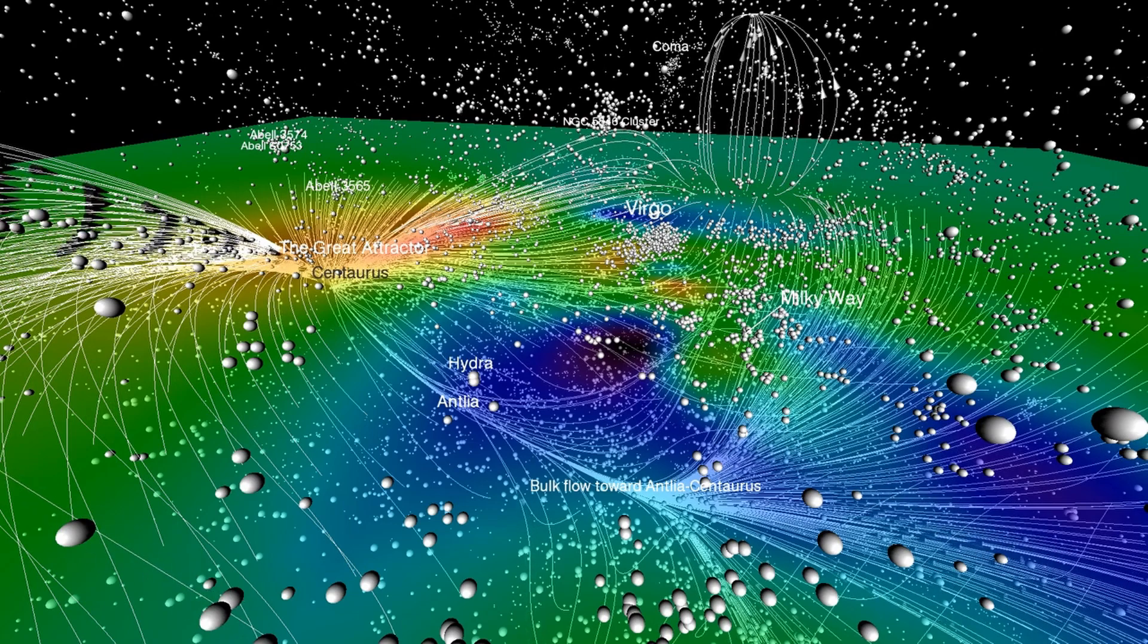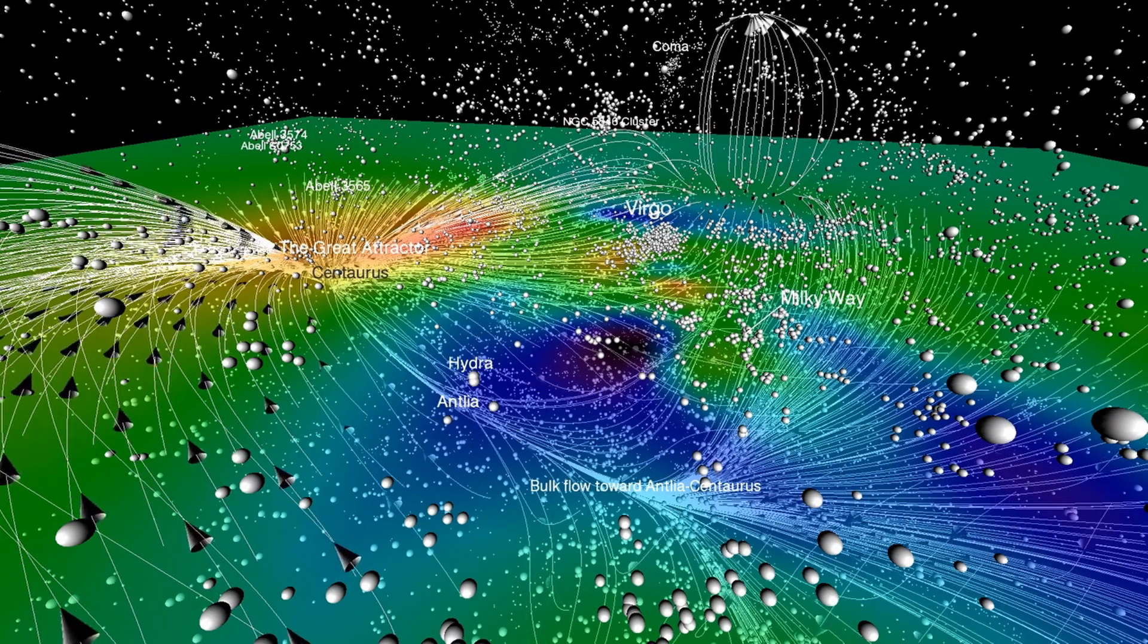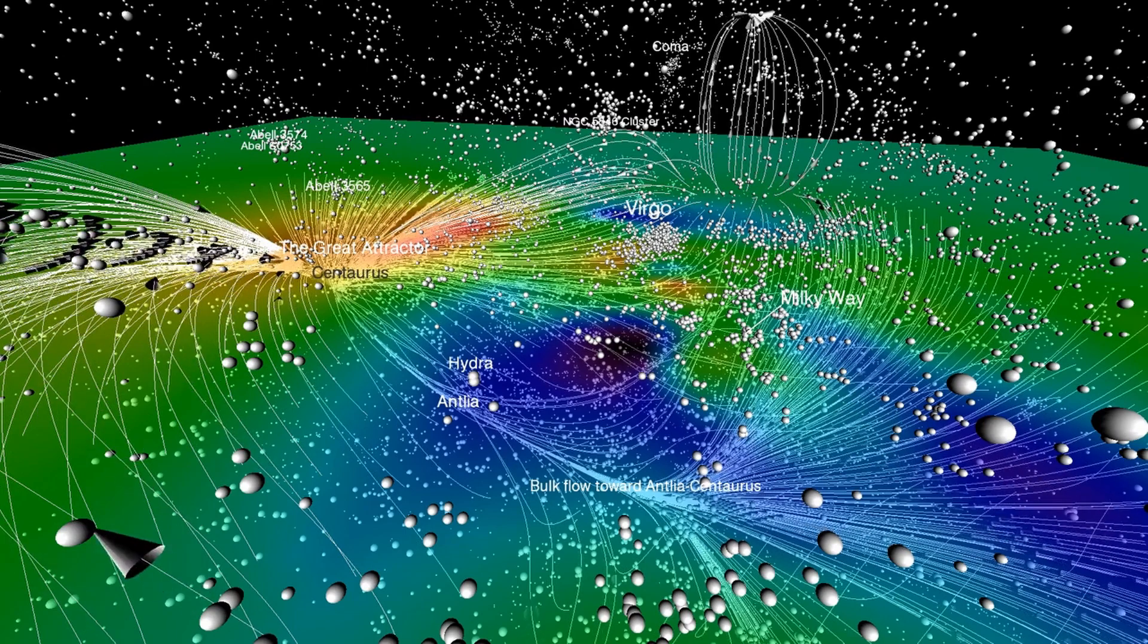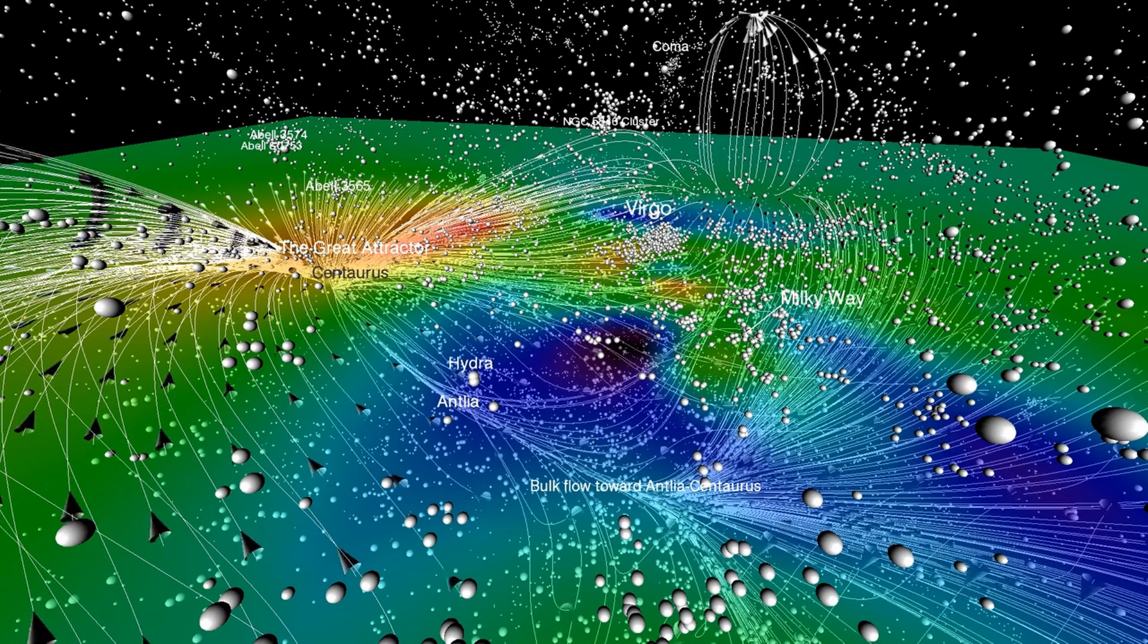Can these vast Birkeland currents wander and cross over? Could it be that a galaxy was ejected from one stream and collided with another?